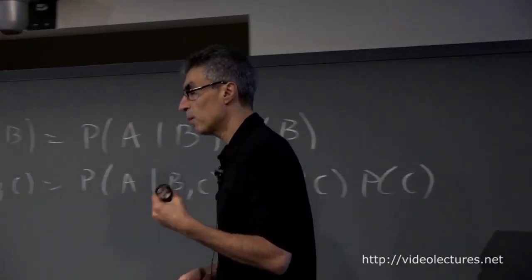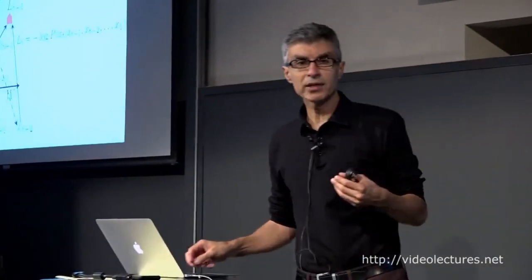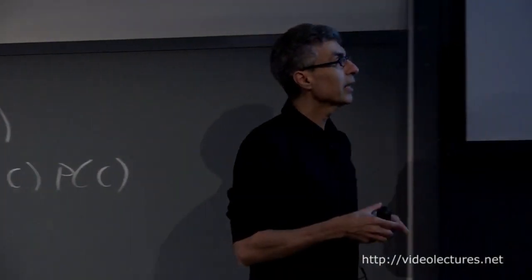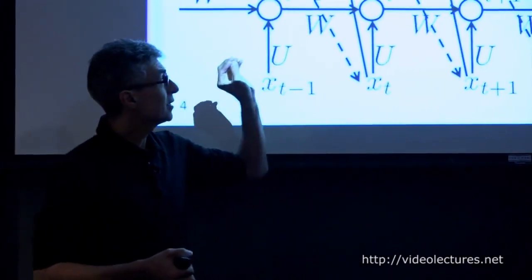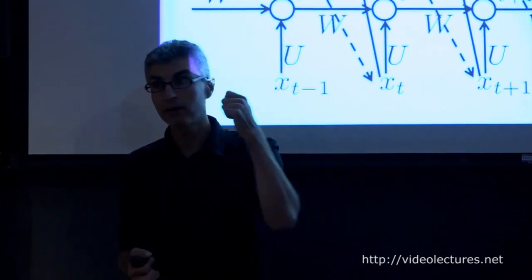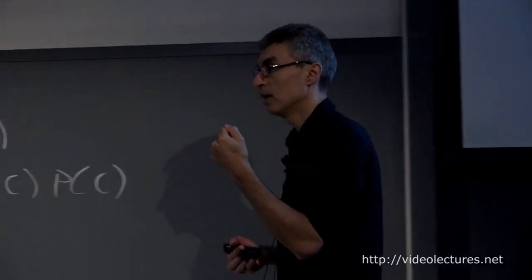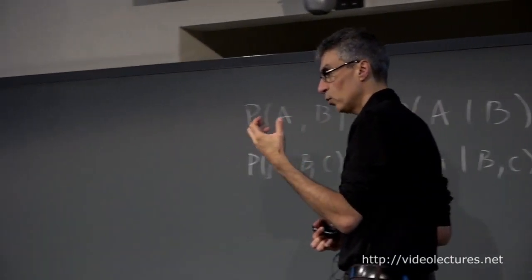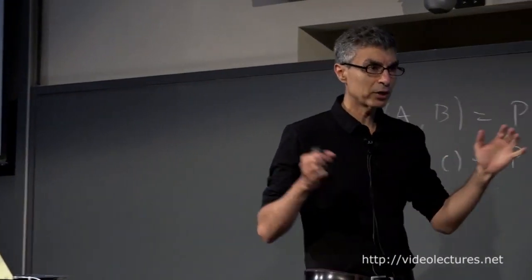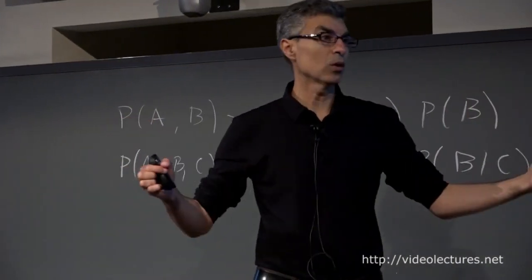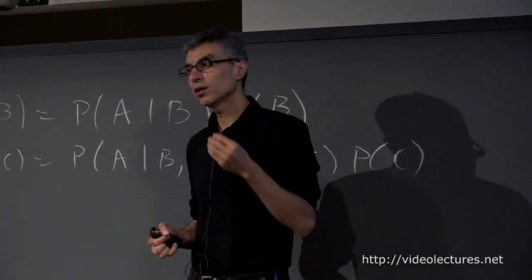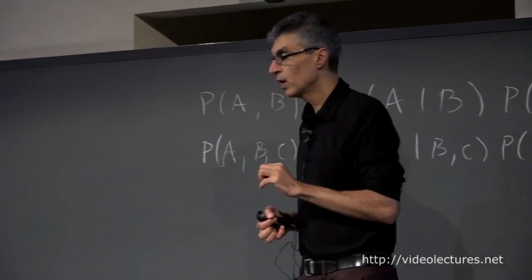We can represent a joint distribution — which would otherwise seem daunting because of so many variables and interactions — as a series of conditional probabilities where on the left-hand side of each probability we have only one random variable. Capturing the joint of that random variable conditioned on the past is much easier than trying to capture the joint overall. We've broken down the hard problem of modeling a joint distribution into modeling a bunch of conditionals, each of which is much easier.